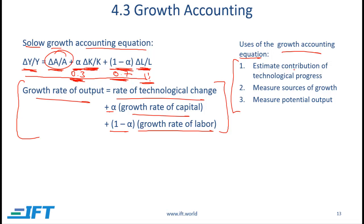One use is to estimate the contribution of technological progress. Technological progress is considered an exogenous variable, meaning it comes from outside this relationship. It can be difficult to estimate directly, but if we know the growth rate of output, alpha, the percentage change in capital, and the percentage change in labor, we can calculate the percentage change in total factor productivity as a residual.